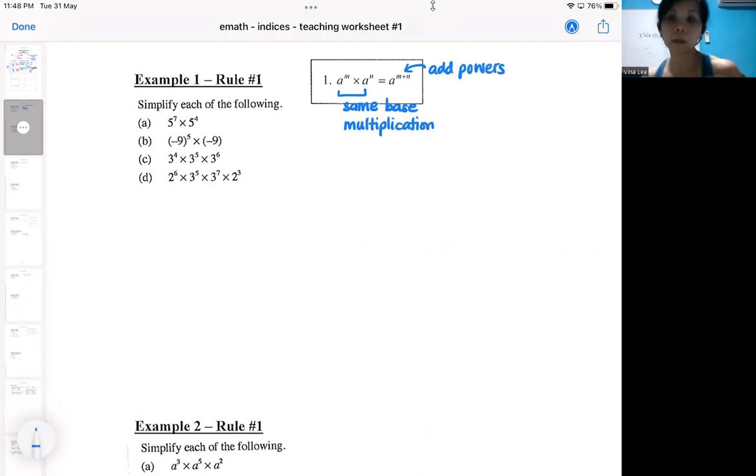Okay, remember the power indicates the number of times the base has been multiplied. So if we go according to the rule, that would just be seven plus four.